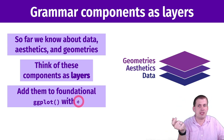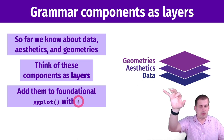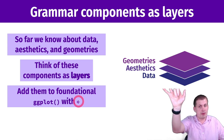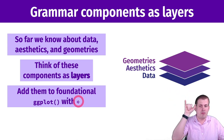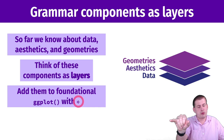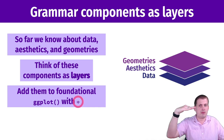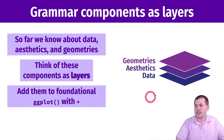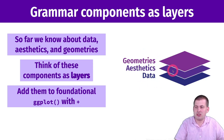When we did the gapminder data, we had ggplot with the gapminder information, then we said geom_point, and then scale_x_log10. We just kept adding these different layers. So far we've talked about three layers: geometries, aesthetics, and data.